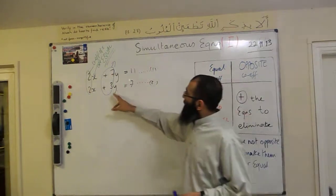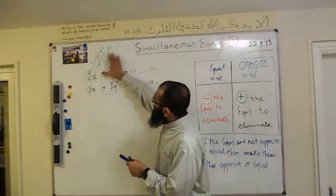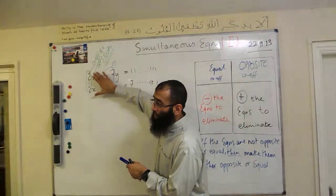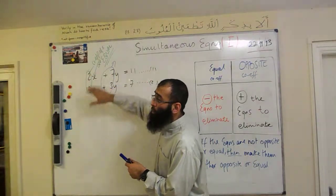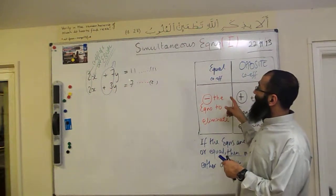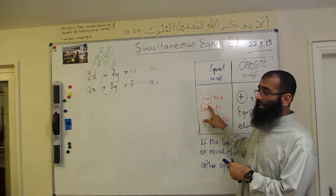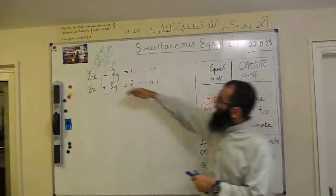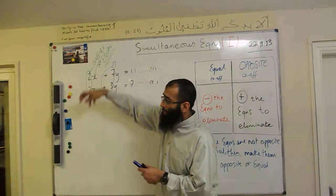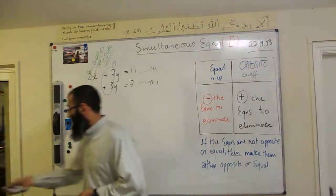So, if you look at the coefficients of x and y, we are going to select x to eliminate. We're going to eliminate x by minusing, because we have equal coefficients — 2 and 2 are equal. So we're going to minus the equations. Let's have a go at that now.